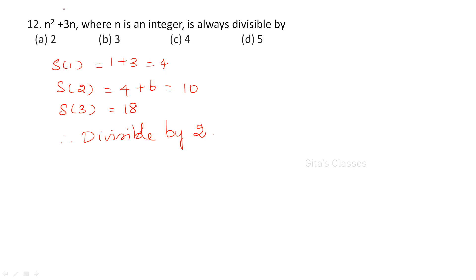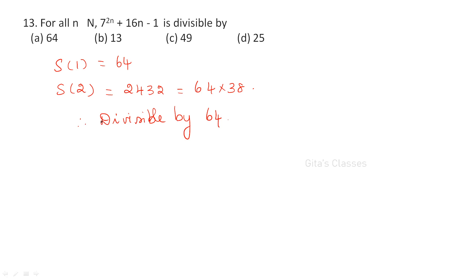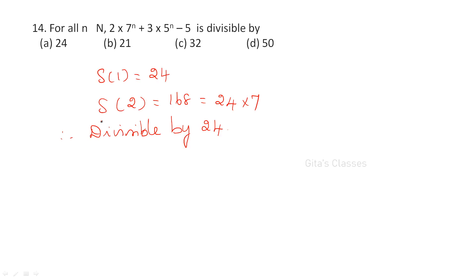This is again divisible by 2, because S(1) = 4, S(2) = 10, and S(3) = 18. You might get some doubt about divisibility by 4, but since S(2) = 10 — which is not divisible by 5 — it cannot be divisible by 5. Therefore it is only divisible by 2. Next, same procedure, divisible by 64 and divisible by 24.